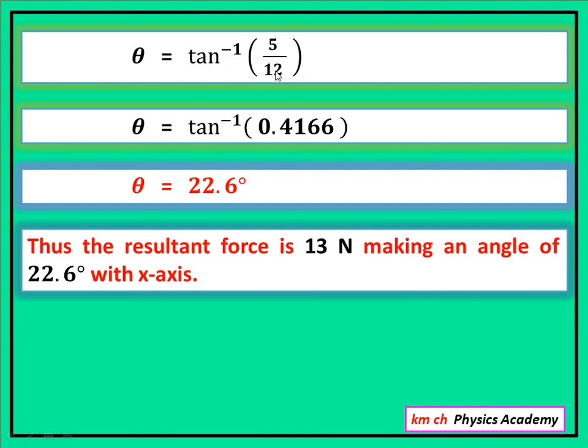5 اور 12 بنتا ہے 0.4166۔ اس کا tan inverse لیں گے calculator سے تو یہ بنتا ہے 22.6 degree. تو اس طرح سے ہم نے force بھی معلوم کر لی اور اس کا angle بھی معلوم کر لیا۔